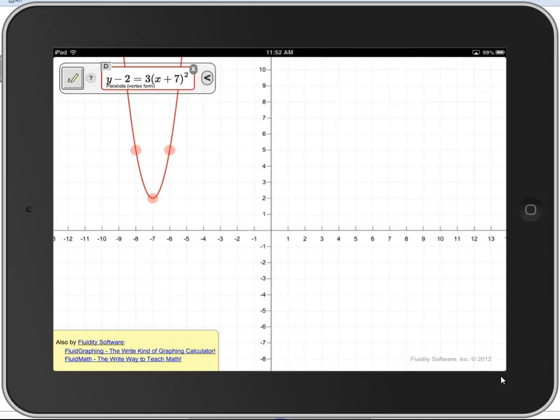If you tap on the algebraic representation, we can change the form again. And here's standard form. And this is useful, but it's hard for people to understand the relationship between those numbers in the graph. So I'm going to tap on it again to come back to vertex form, which is more intuitive.